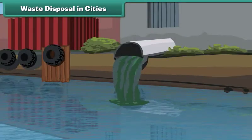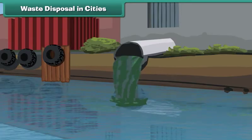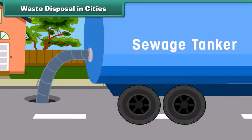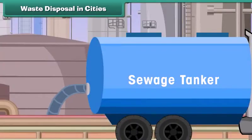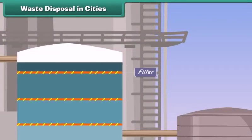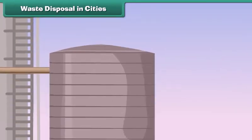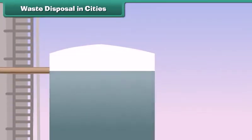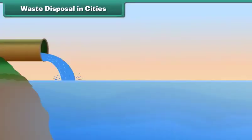Waste treatment ensures that rivers are not polluted. Raw sewage collected from all over the city is first passed through a system of filters placed in machines. Filters help separate debris from heavy particles. The debris is then pumped into another tank where the remaining solid material settles down — this settled material is called sludge. The leftover liquid is drawn out, treated with chlorine to make it germ-free, and released into a river.